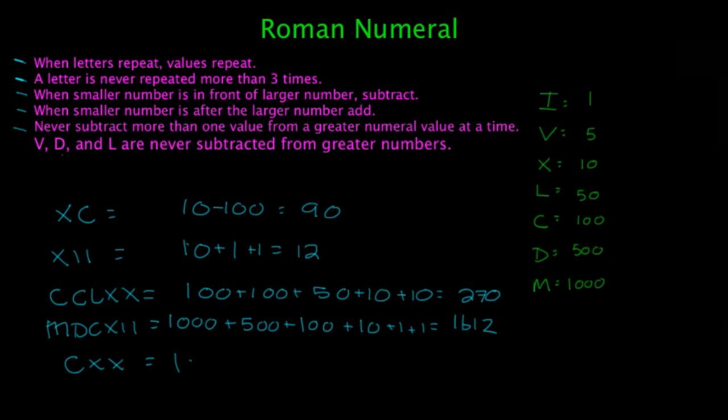CXX is going to be 100, plus 10, plus 10. And that'll give you 120. And that's how you're going to do the Roman numerals. So go ahead and practice. I'm sure you can find some good ones online. I'll go ahead and post some links underneath for practice. And good luck.